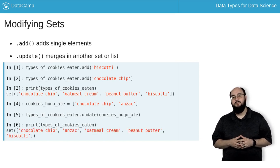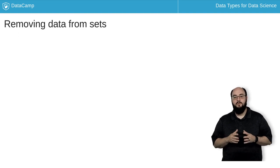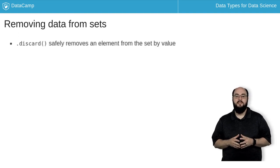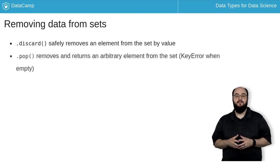Now, let's learn how to remove some elements from our set. When removing data from a set, we can use the discard method to safely remove an element from the set by its value. No error will be thrown if the value is not found. We can also use the pop method to remove and return an arbitrary element from the set.